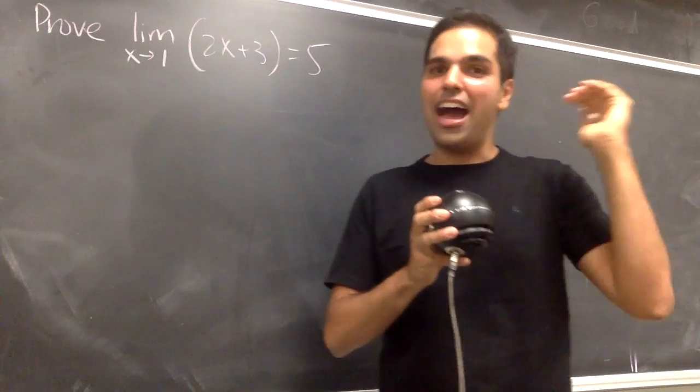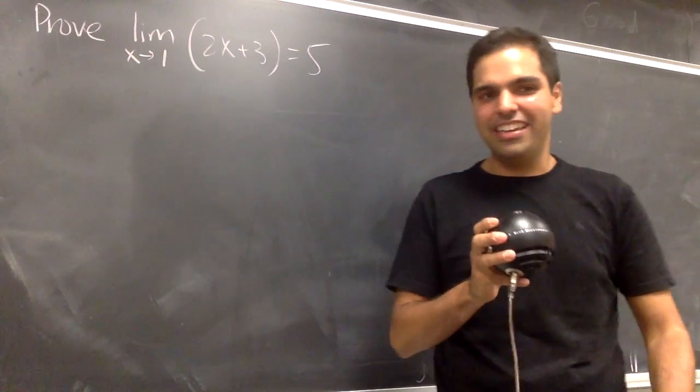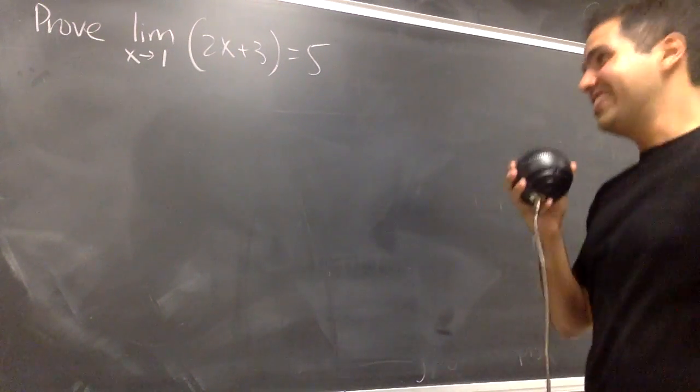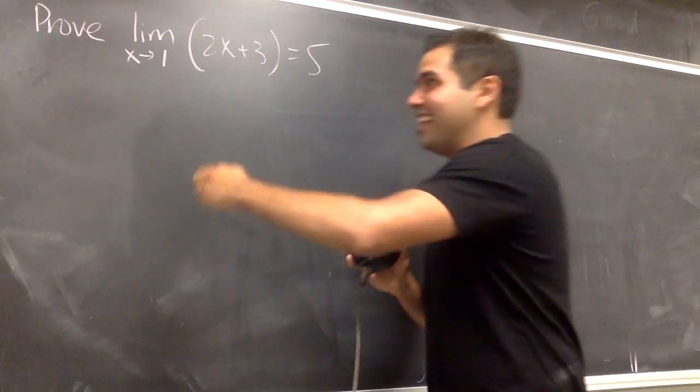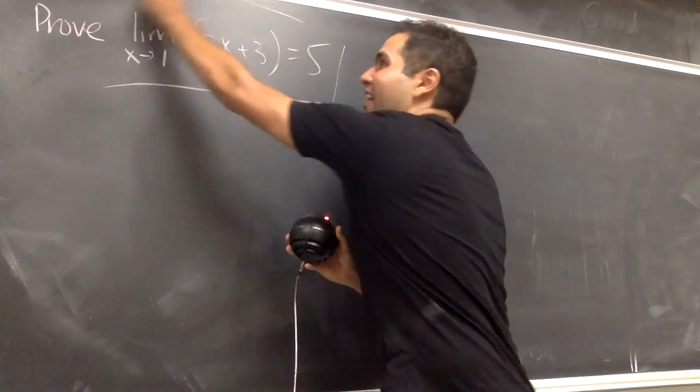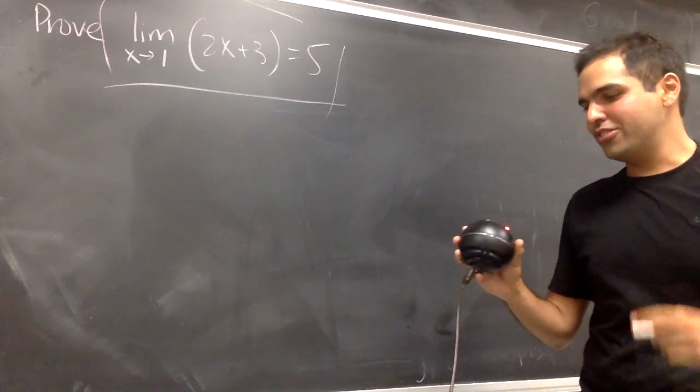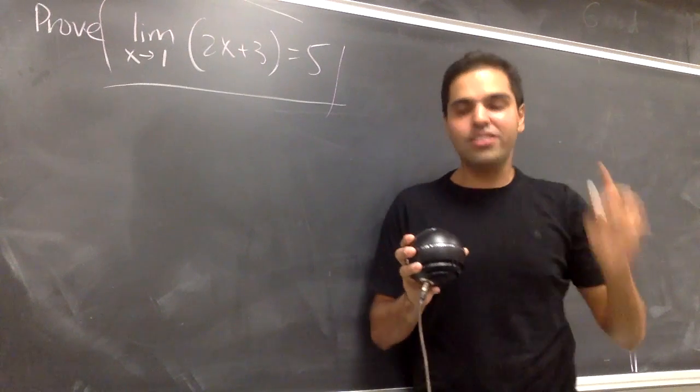So that everyone is happy. The physicists are happy, the mathematicians are happy, everyone else is happy too, because it's a happy world. Alright, so limit x goes to 1 of 2x plus 3 equals to 5. What does that mean using the definition?